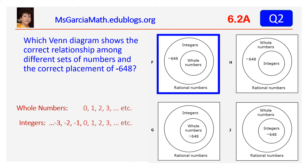Negative 648 is an integer. It is also a real number and a rational number. The answer is F.